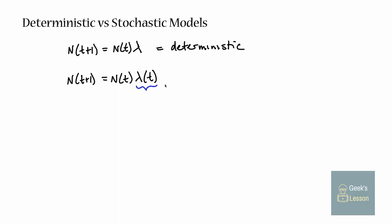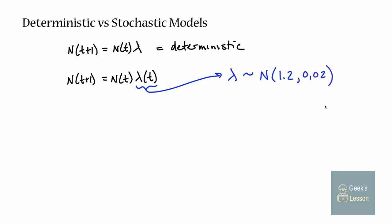Where lambda at time t is drawn from some probability distribution every time step t. So let's say lambda in this case is normally distributed with a mean of 1.2 and a variance of 0.02. So it's small - there's not a lot of noise, but it's some noise.